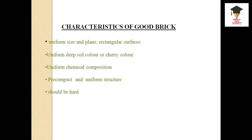Next is the characteristics of a good brick. These five points give the characteristics of a good brick: it should have uniform size, plane and rectangular surface, it should be deep red in color with uniform chemical composition, pre-compact and uniform structure, and should be hard.